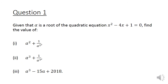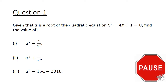But before we get started on Vieta, let's look at a question on the root of a quadratic equation. Question 1: Given that alpha is the root of the quadratic equation x squared minus 4x plus 1 equals 0, find the value of: part 1, alpha squared plus 1 over alpha squared; part 2, alpha cubed plus 1 over alpha cubed; and part 3, alpha cubed minus 15 alpha plus 2018. Please pause the video here to give this question a good try.